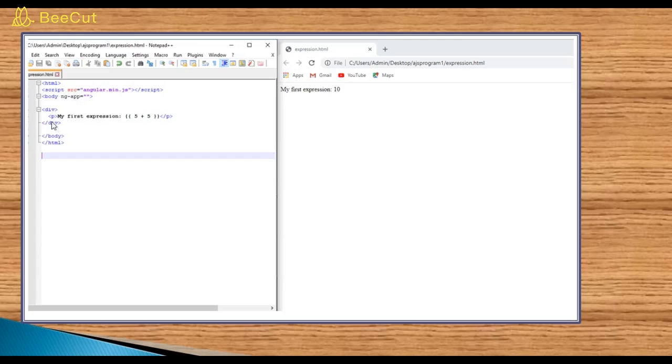Then div tag starts here and div tag closes here. I am using a paragraph HTML tag. My first expression in curly braces 5 plus 5. You can see here the output: my first expression 5 plus 5 equals 10.